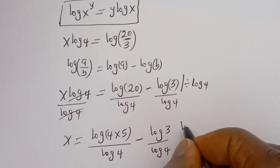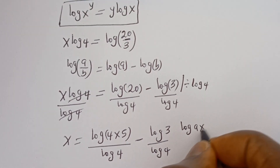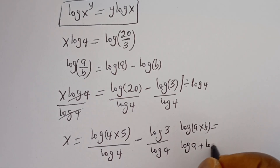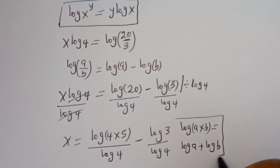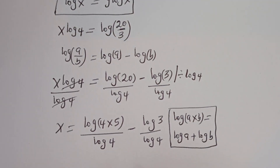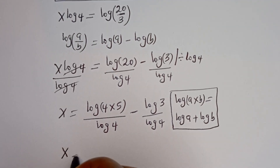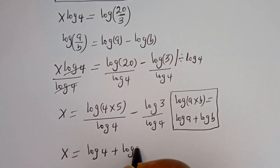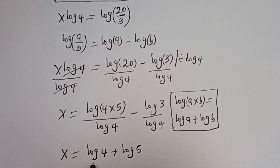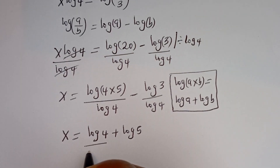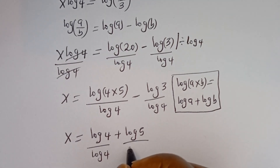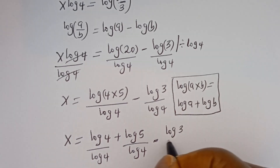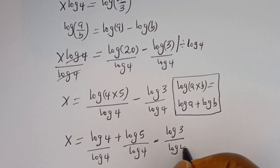Take note of this: if you have log A multiplied by B, this is equal to log A plus log B. So this can be written as s is equal to log 4 divided by log 4, plus log 5 divided by log 4, minus log 3 divided by log 4. Log 4 over log 4 cancels to give 1.